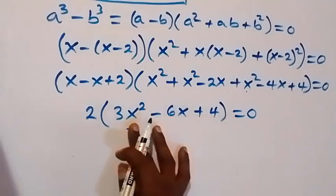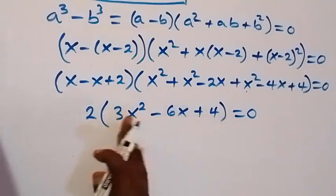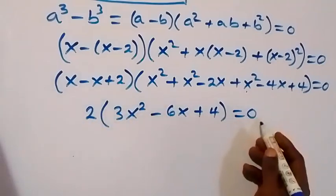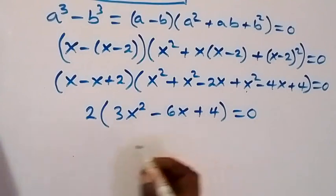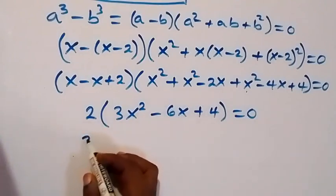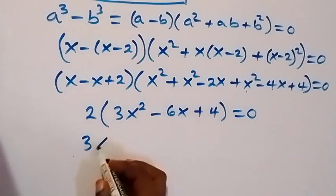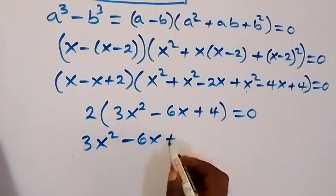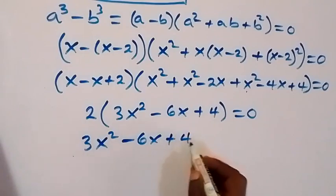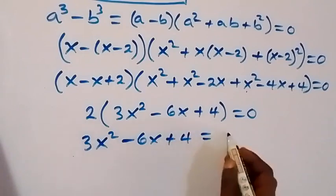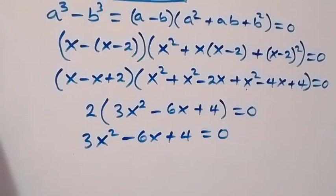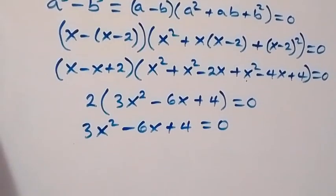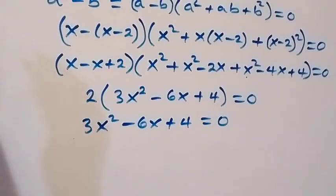After dividing through by 2, we get 3x squared minus 6x plus 4, equals 0.